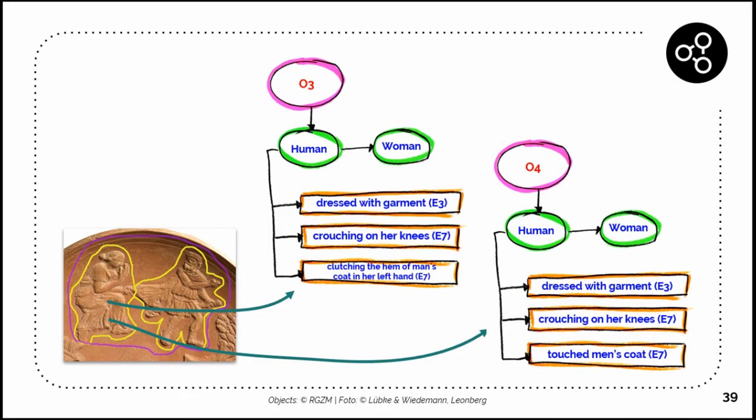If we look at the woman, for example, we can say she's dressed with a garment, she's crouching on her knees, and she is clutching the hem of the man's coat with her left hand, or she is touching the man's coat in the end. So two different observations.